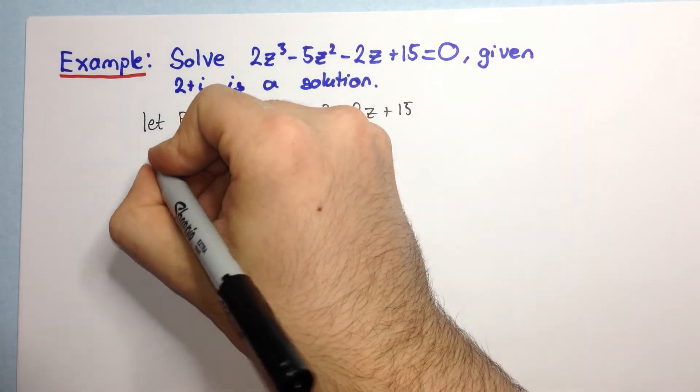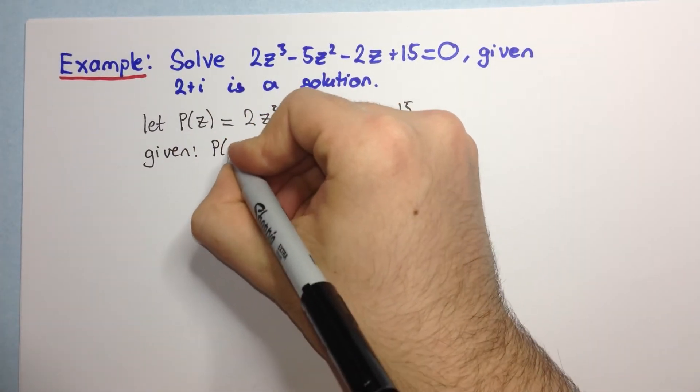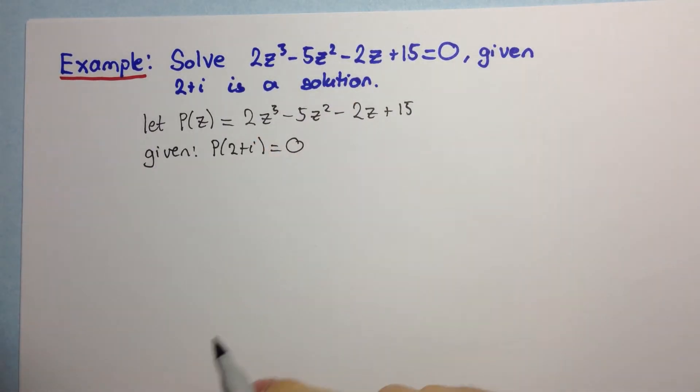Now, in the question we are given that p of 2 plus i is equal to 0. Because since it's a solution, p of 2 plus i is equal to 0.